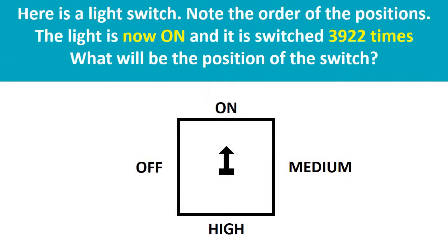Here is a light switch. Note the order of the positions. The light is now on and it is switched 3922 times. What will be the position of the switch? You have 15 seconds. Time is up. Did you find the answer?